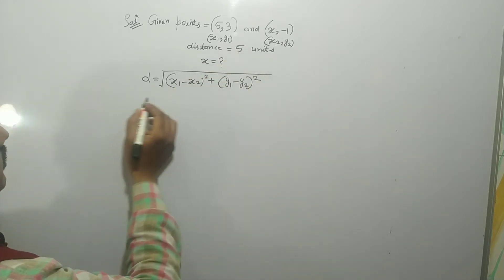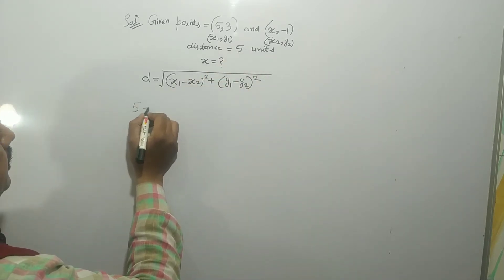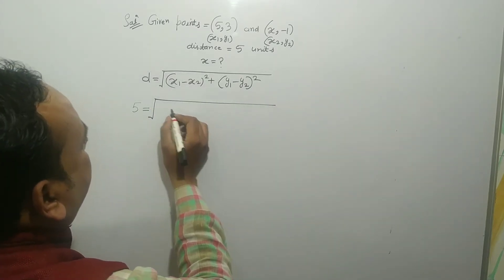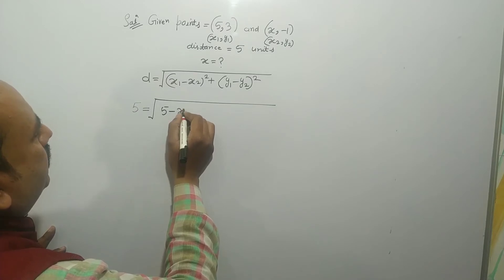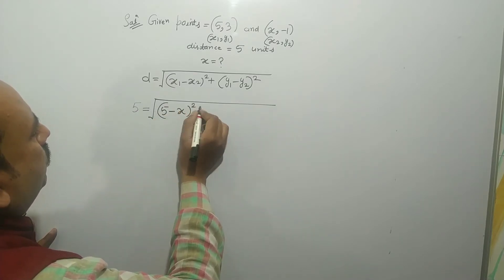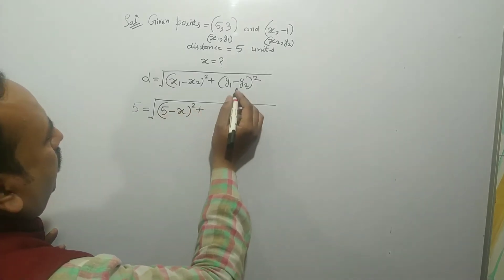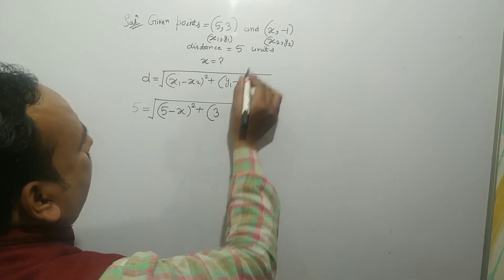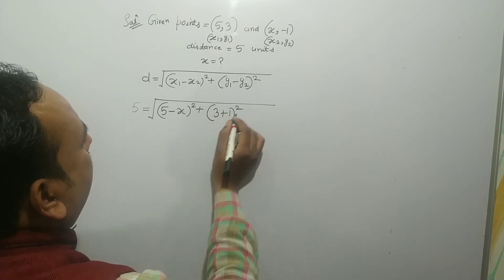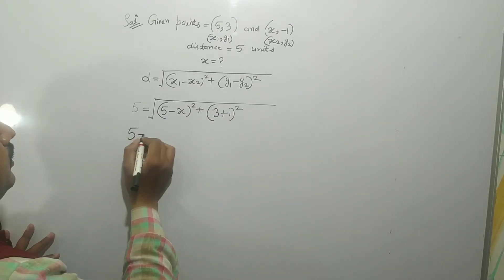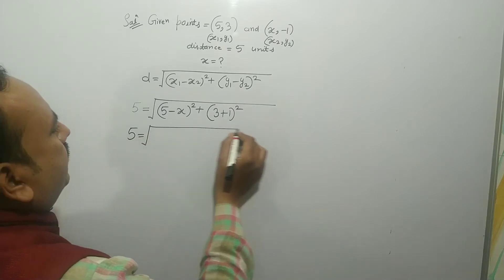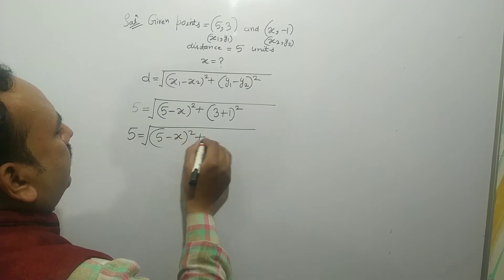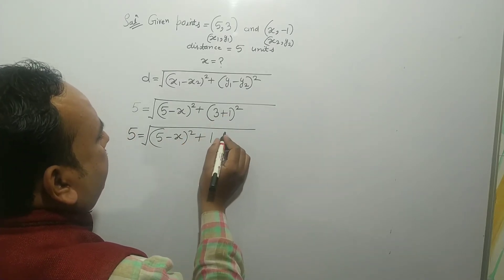Putting the values: distance between the points is 5. Value of x1 is 5, value of x2 is x, so we get (5 − x)². For y1 − y2: y1 is 3, y2 is −1, so minus minus gives plus, meaning (3 + 1)² = 4² = 16. So we have: 5 = √[(5 − x)² + 16].